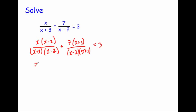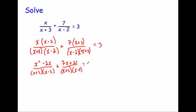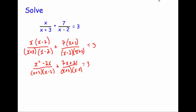Expanding the numerators: the first gives x squared minus 2x over bracket x plus 3 bracket x minus 2. The second gives 7x plus 21 — switching the denominator brackets to x plus 3 bracket x minus 2 — and that all equals 3. Now we have a common denominator, so we add the numerators: x squared, then minus 2x plus 7x gives plus 5x, then plus 21. So we get x squared plus 5x plus 21 over bracket x plus 3 bracket x minus 2, equals 3.